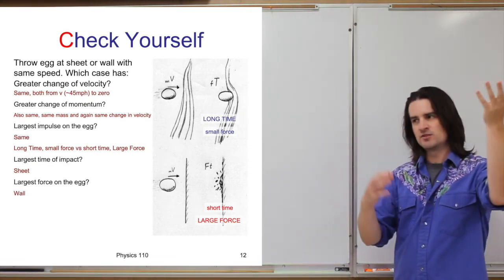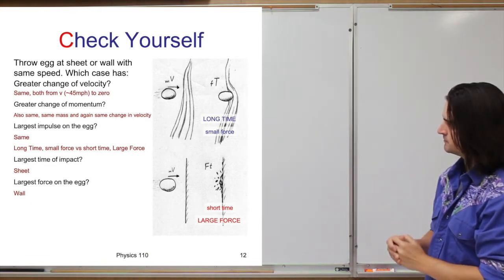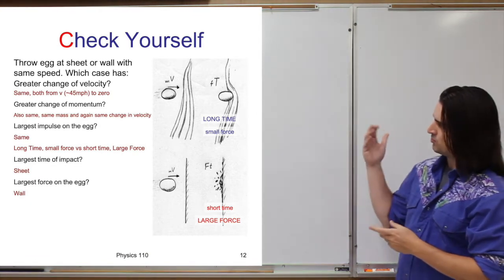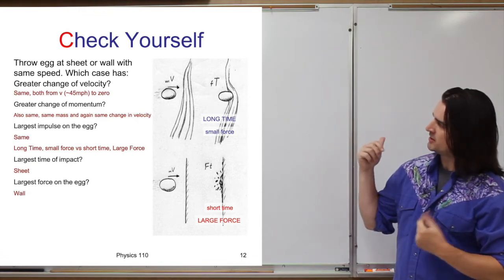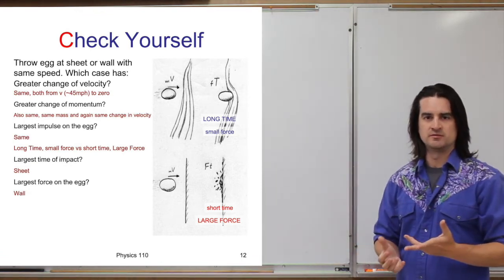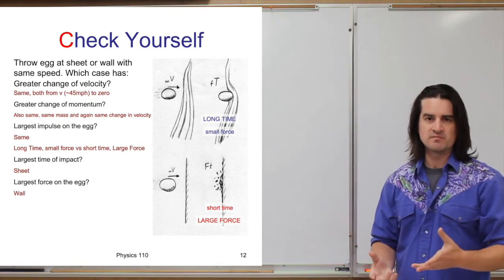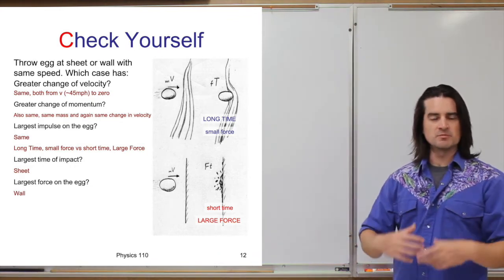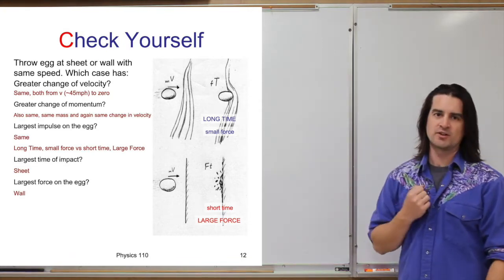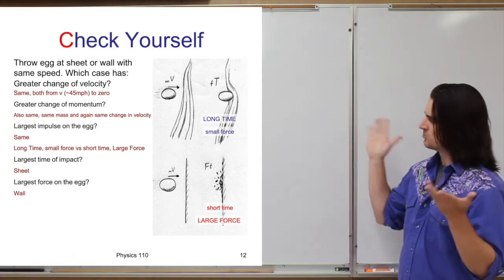Which one applies the larger impulse, or which has a larger impulse applied to it? If the change of momentum is the same, and change of momentum equals the impulse applied, then the impulses are also the same. So we've got: same velocity, same momentum, same impulse — so what's different here?